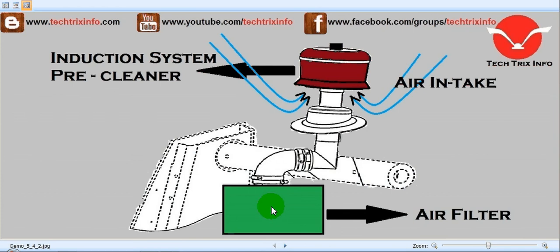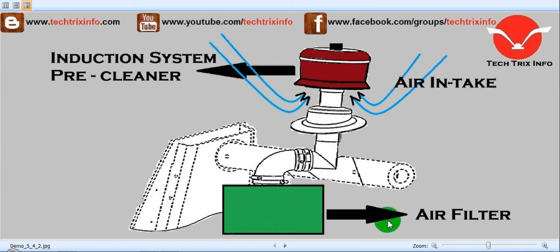The air filter further purifies and cleans the air by removing dust particles or impurities that were not cleaned by the pre-cleaner. The air filter unit is made of two layers of paper or cloth with a good micron rating, which restricts and filters out dust particles and other foreign materials coming through from the pre-cleaner.